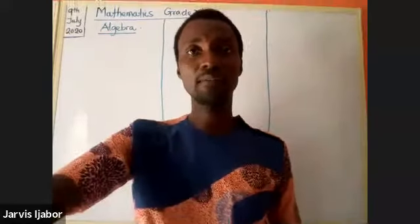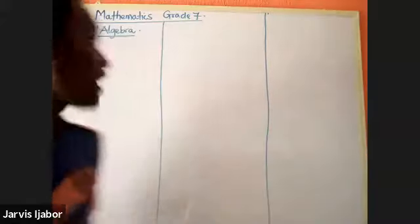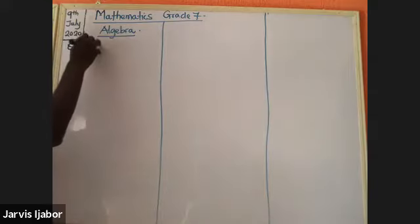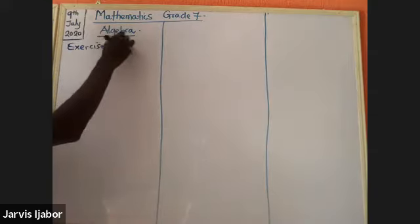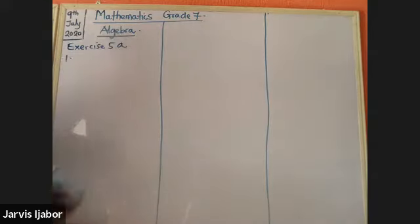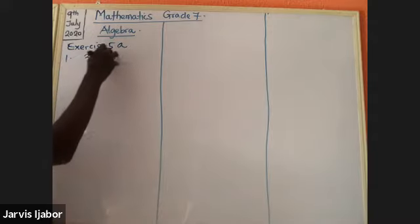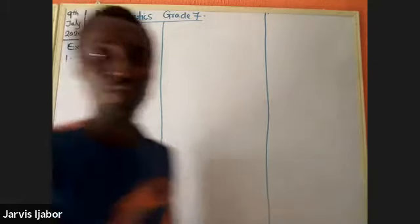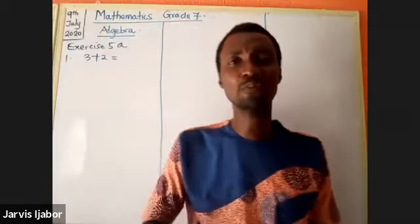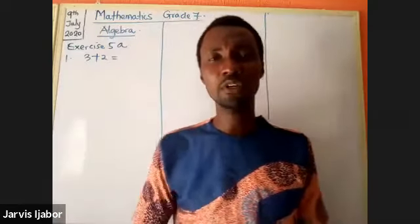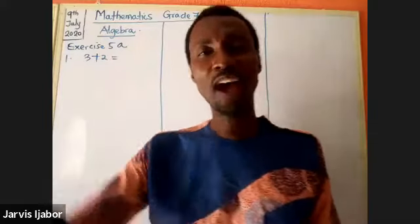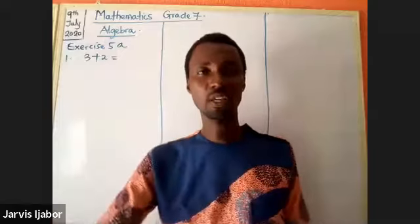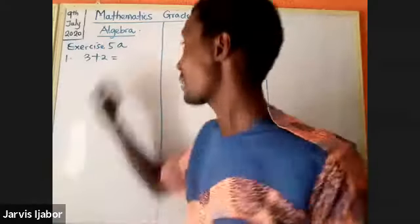Now look at question one, exercise five. Question one says three plus two — what's the answer? Five. How do you know it's five? It means three plus two: we start from three, count two more steps. So three, count two — four, five. The answer is five.